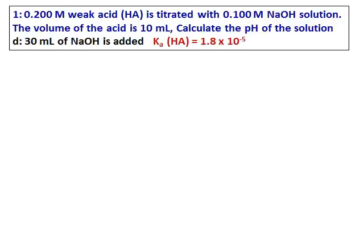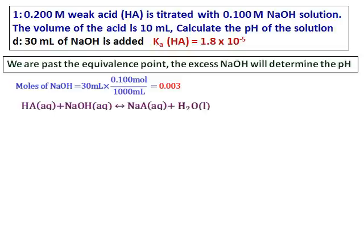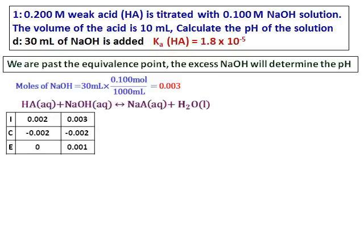Let's do the last part. When I add 30 milliliters of sodium hydroxide, this is past the equivalence point. Therefore, the excess NaOH will determine the pH of the solution. Start by calculating the moles of sodium hydroxide, which will react with and completely neutralize the acid — that is why the acid's moles become equal to zero.